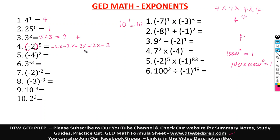If you don't want to stress yourself multiplying out and getting confused with the signs, once you have a negative number in parentheses, look at the power: is it an odd number or an even number? Five is an odd number. When you have a negative number raised to an odd power, the sign of your answer will always be negative.